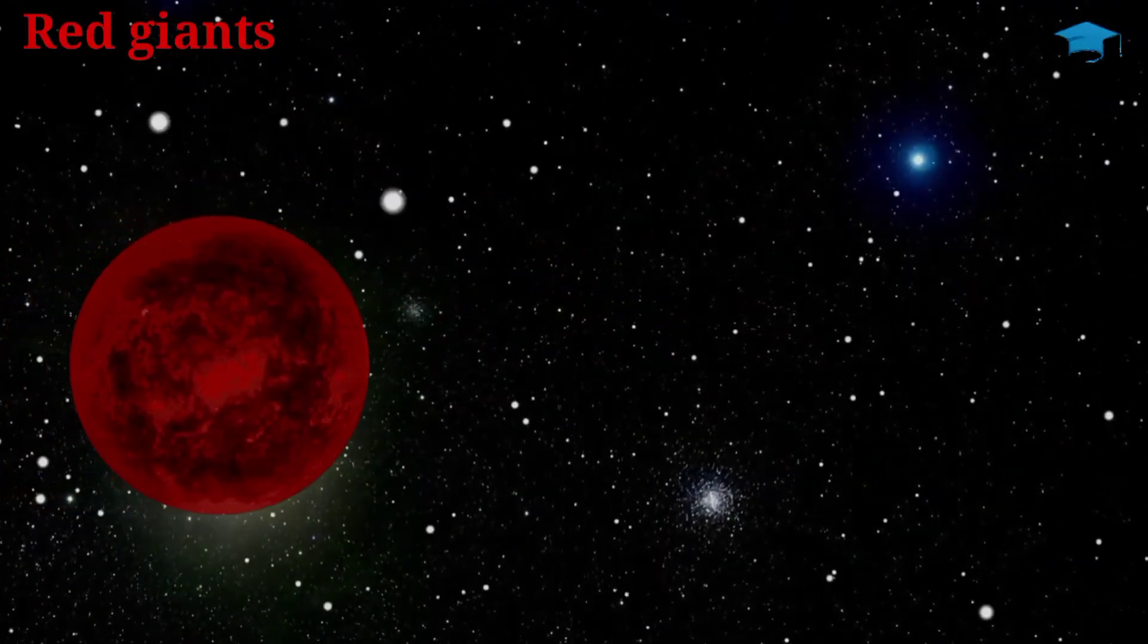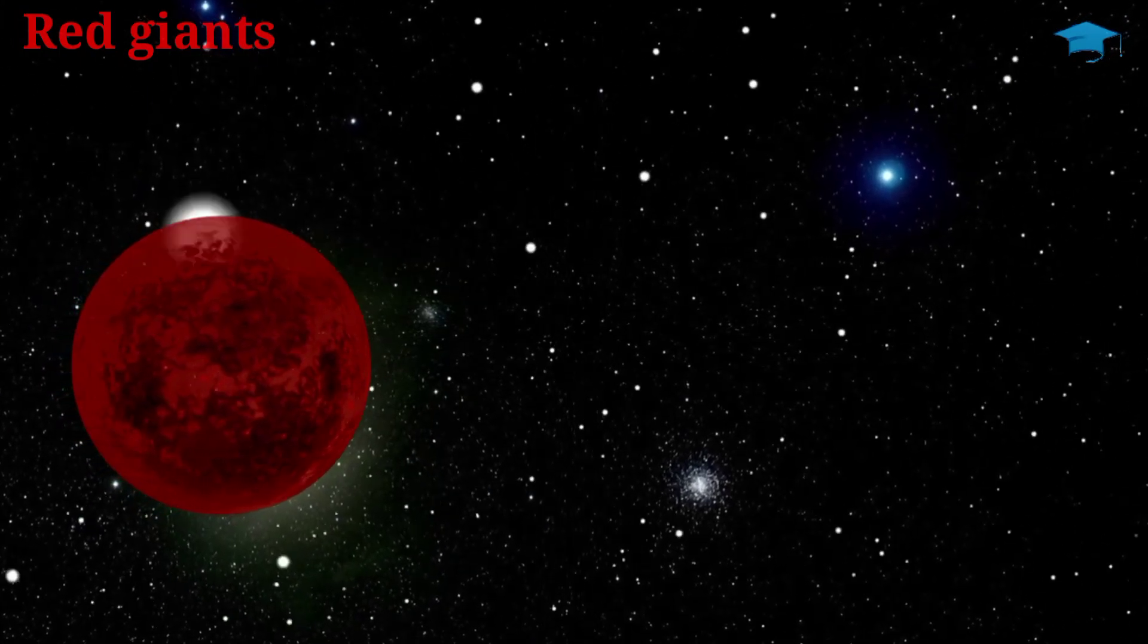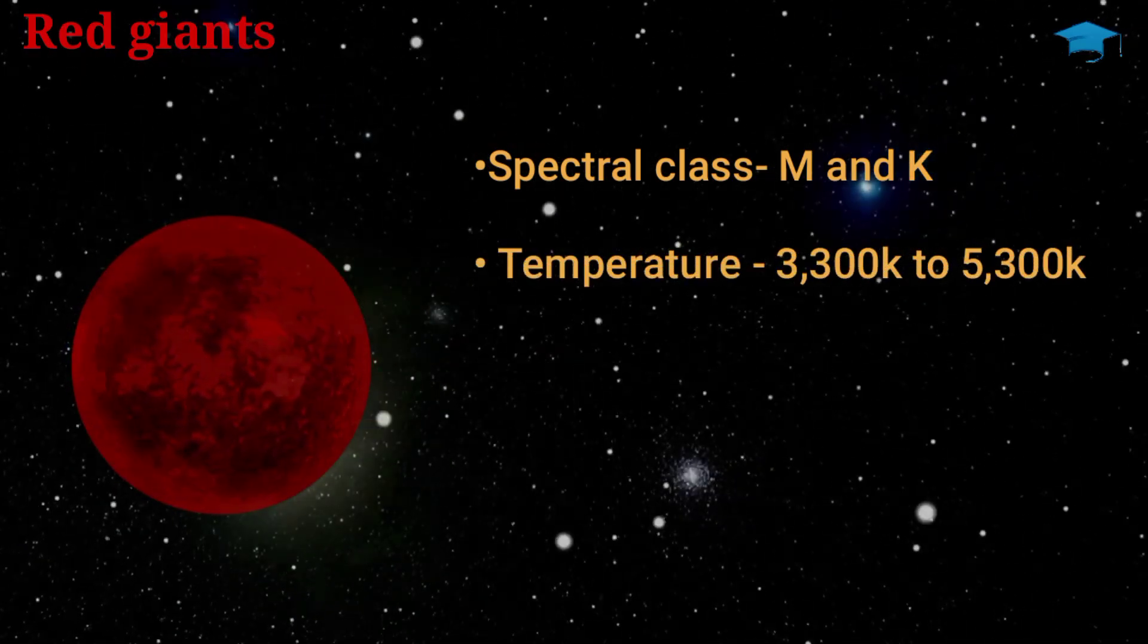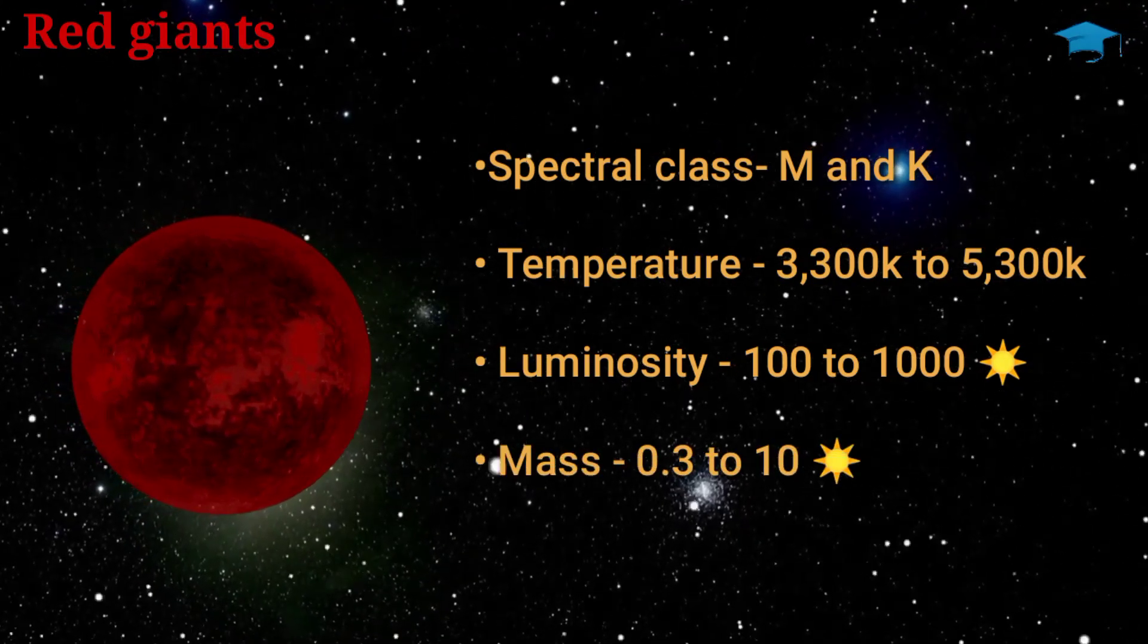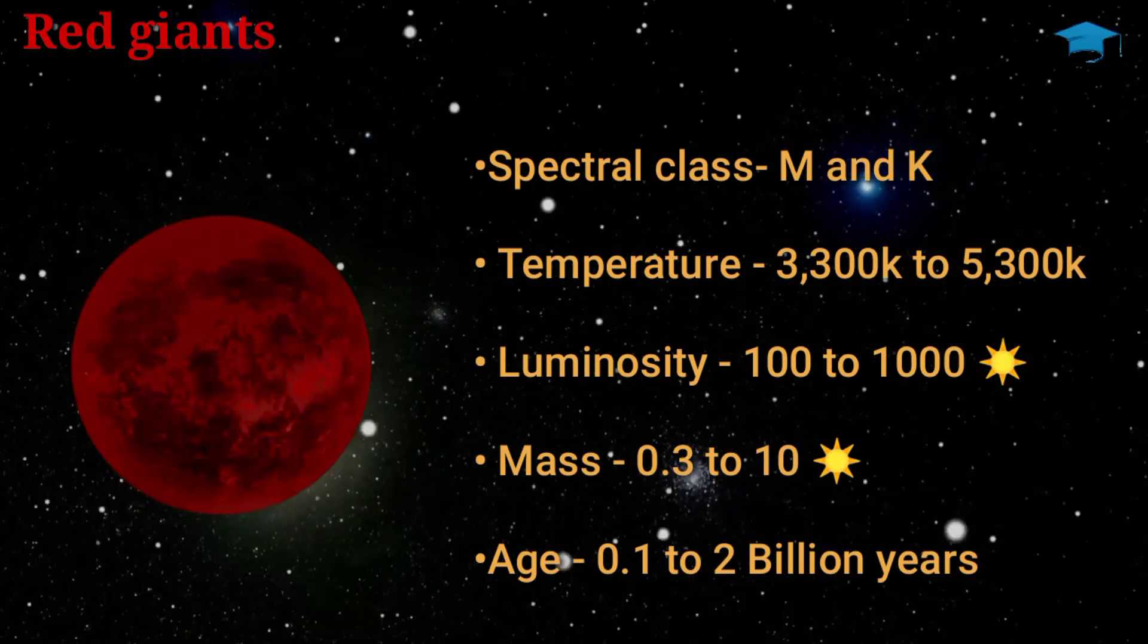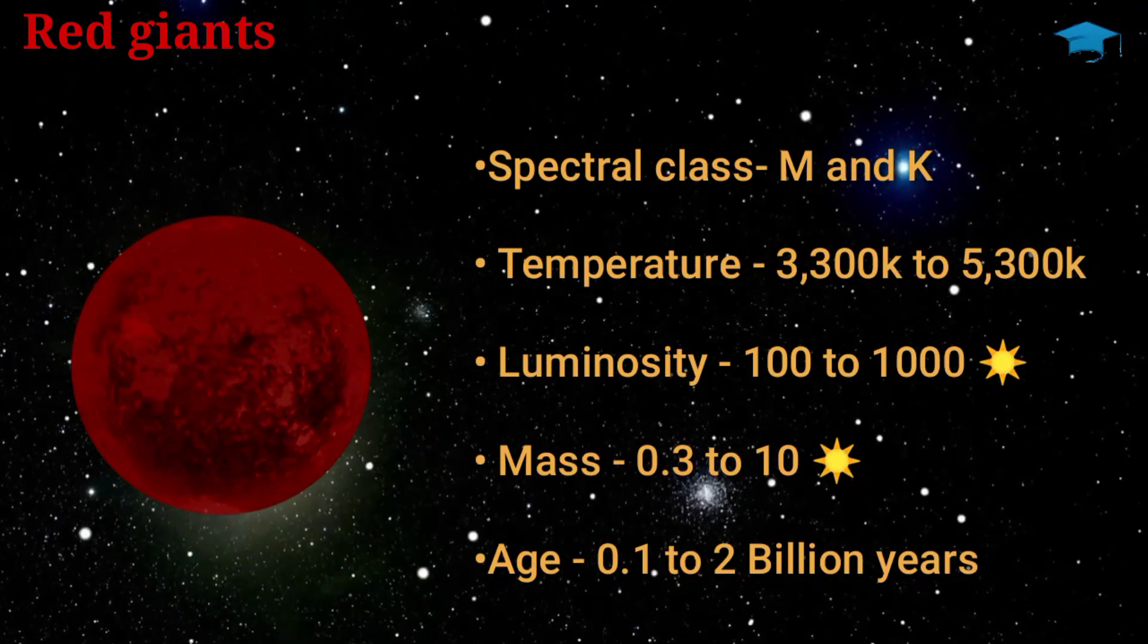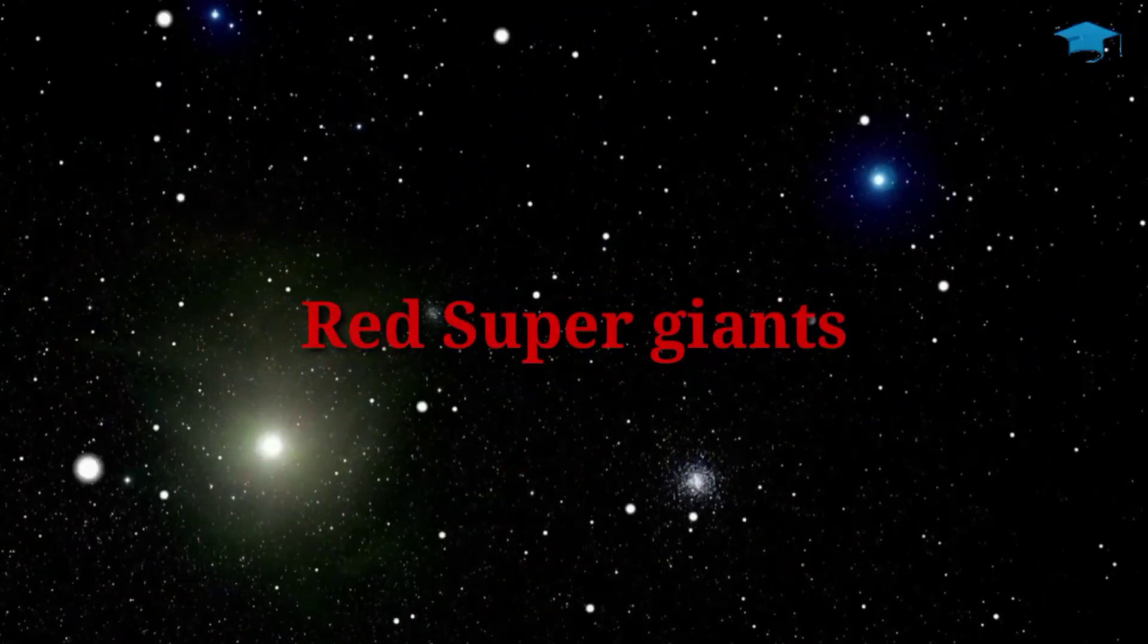Now comes red giants. These stars have a prevalence of around 0.4%, means very rare to find. And they are of spectral type M and K. They have a temperature of around 3,300 to 5,300 Kelvin and luminosities of around 100 to 1,000 times that of our sun. They have a mass of around 0.3 to 10 times that of our sun and live around 0.1 to 2 billion years. An example of a red giant is Arcturus.